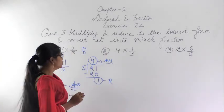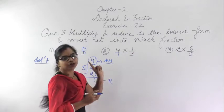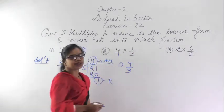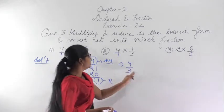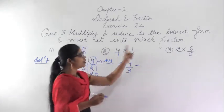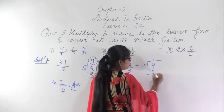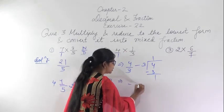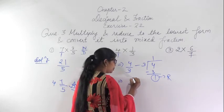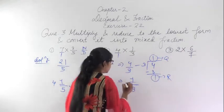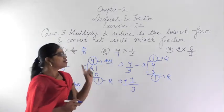Similarly for the second question: write it down as a fraction, find the product. Four ones are 4, giving 4/3. We cannot cancel this because 3 does not appear in the 4 table and 4 does not appear in the 3 table, so this is already the lowest form. Convert to mixed fraction: divide 4 by 3, 3 ones are 3, remainder 1. The answer is 1 and 1/3. Verify: 1 three is 3, plus 1 is 4 over 3.